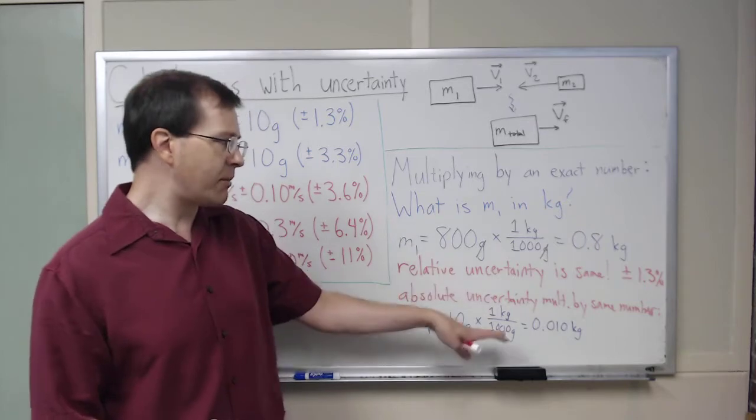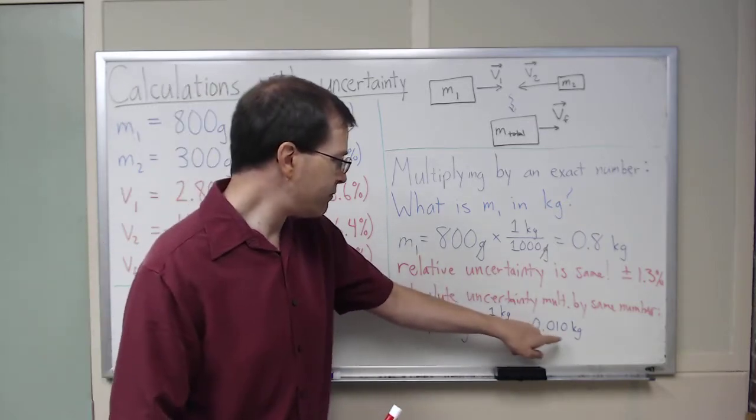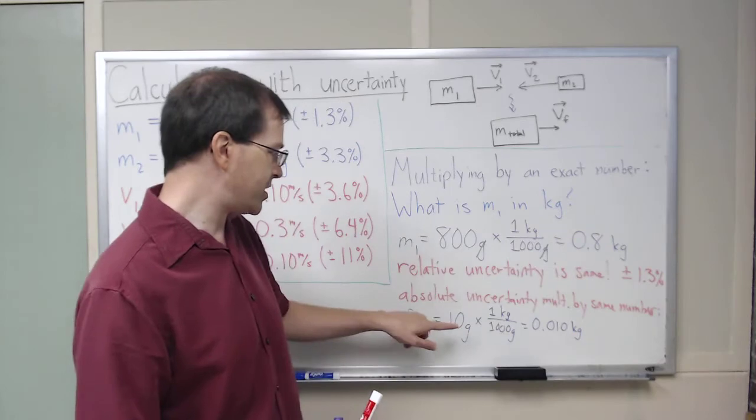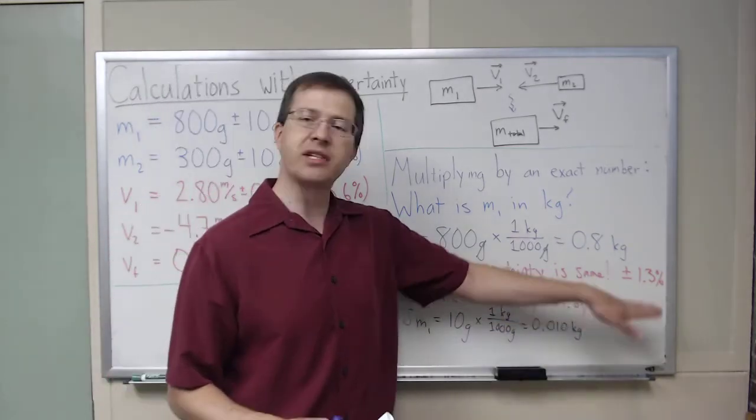just multiply by the same number, and you can see that taking the ratio of this over this is the same as the ratio of this over this, so it's the same percent uncertainty either way.